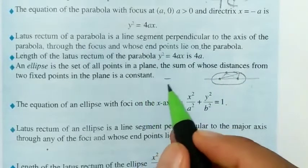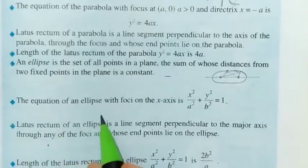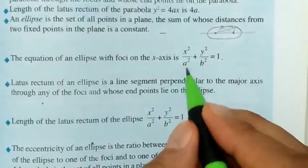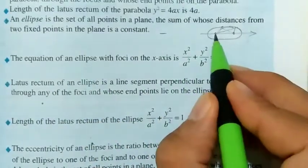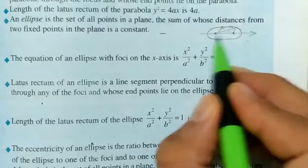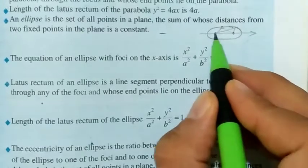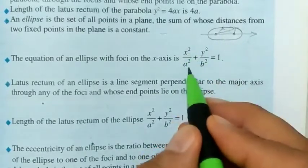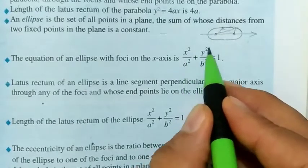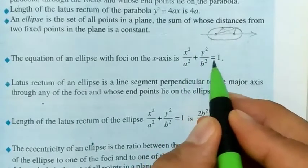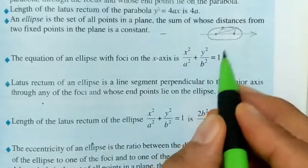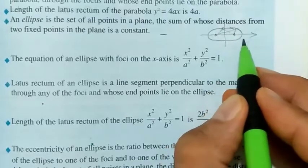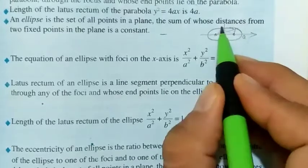The equation of the ellipse with foci on the x-axis is: x²/a² + y²/b² = 1, where a is the semi-major axis along the x-axis and b is the semi-minor axis.